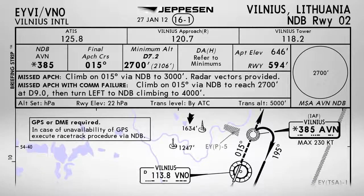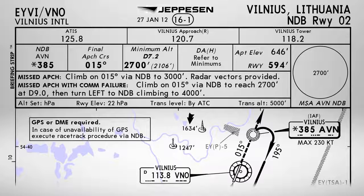Today we will be flying an NDB DME approach for runway 02 in Vilnius International Airport. On the top of the chart we can find the radio frequencies for communication, frequency of the beacon, final approach course, minimum altitude and elevation, and so on. The important part for us is the missed approach procedure — we will be climbing on heading 015 via NDB to 3000 feet and then waiting for vectors. If we have a communication failure and need to perform a missed approach, we will climb on the same heading via NDB to reach 2700 feet at distance 9 miles, then left to NDB climbing to 4000 feet.